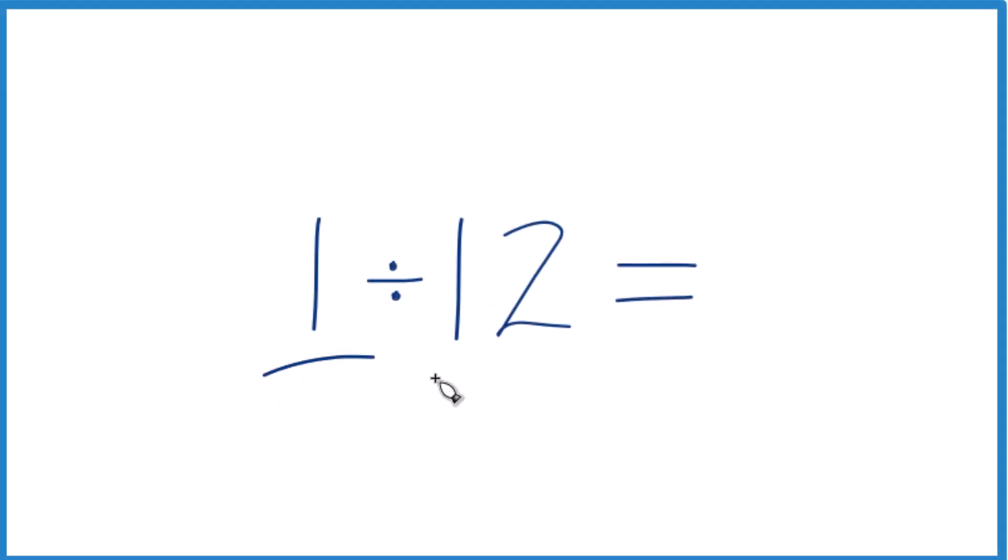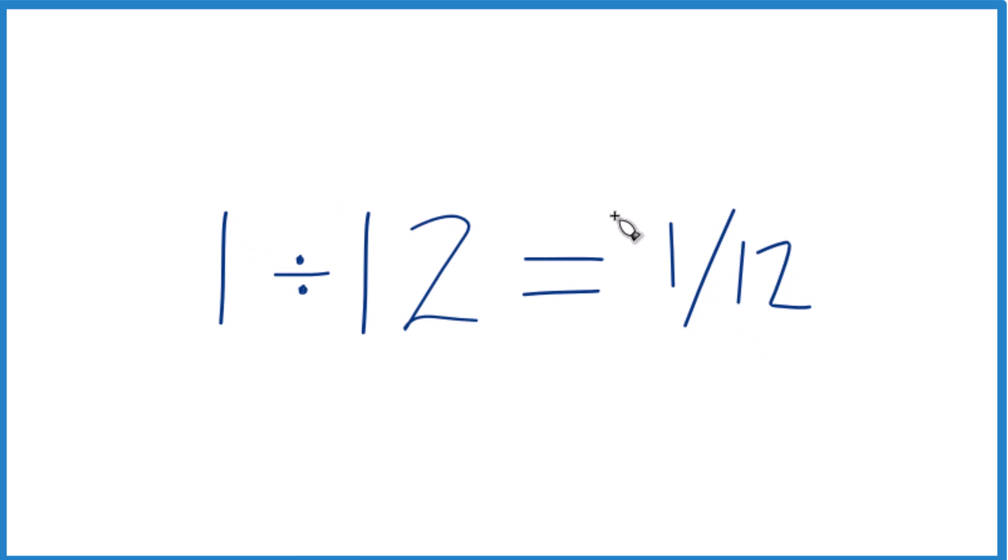Let's divide 1 by 12, and here's how we could do it. We could just call this 1 over 12, just do a fraction like that. That's the same as 1 divided by 12. Or we could divide 1 by 12 and get a decimal.